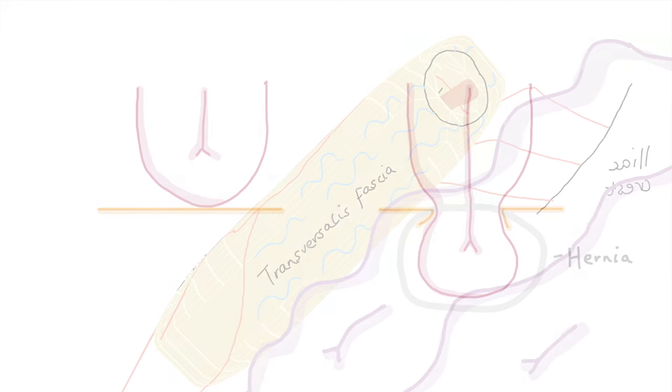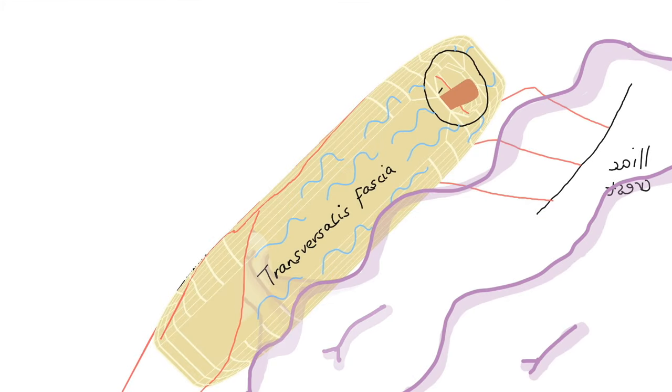When part of an organ, like the small bowel, pokes into an area it's not supposed to be in, we call that a hernia. When part of an organ intrudes into the inguinal canal, we call that an inguinal hernia.